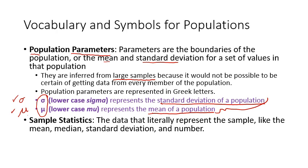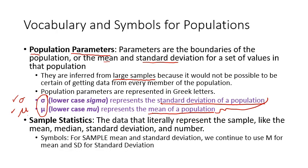We then talk about sample statistics, and these are the data that literally represent the sample, like the mean, median, standard deviation, and the number in the sample, number of individuals. And the symbols you've already worked with, they're just letters that we're familiar with. For mean and standard deviation, referring to the sample, where we know every single data point, we continue to use M for mean and SD for standard deviation.